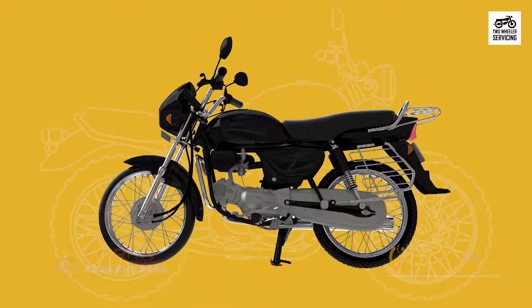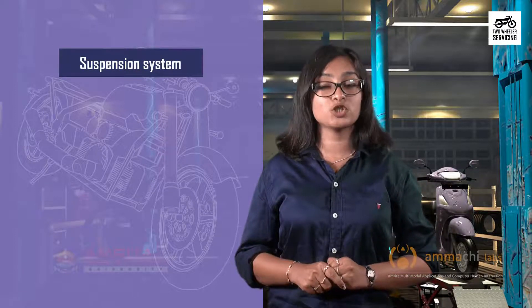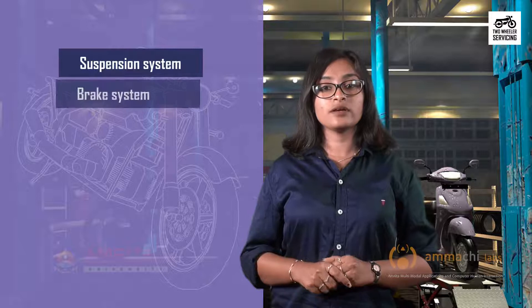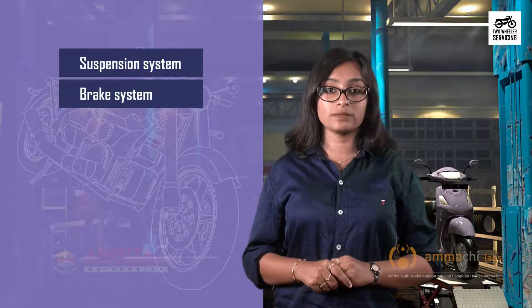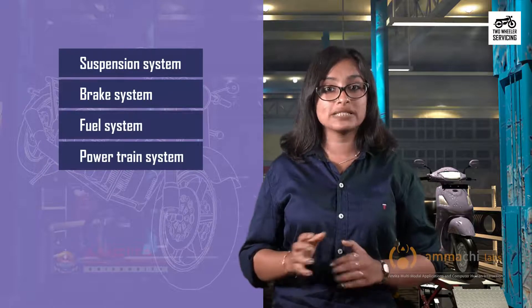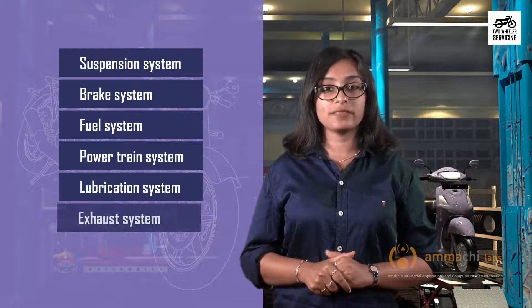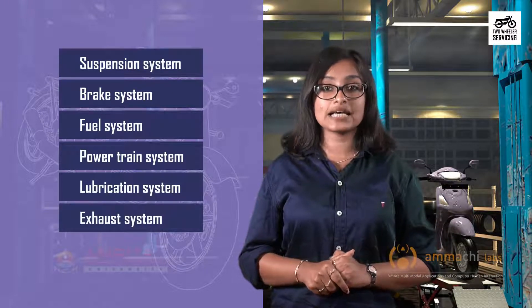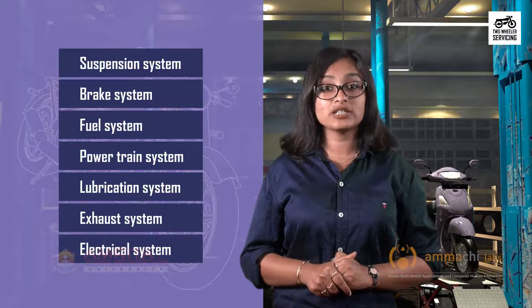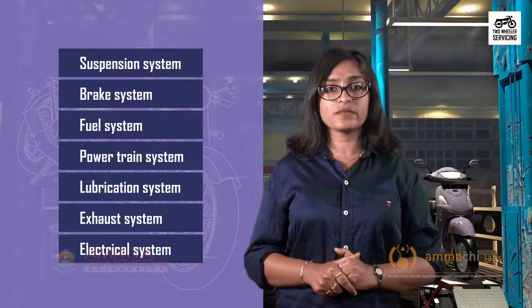They may be classified into various systems. The suspension system makes the ride smooth by absorbing shocks during the ride. The brake system slows or stops the bike. The fuel system makes fuel and air available to the engine. The powertrain system converts the fuel into power that propels the bike. The lubrication system lubricates the engine parts. The exhaust system removes residual gases and smoke, and the electrical system includes the battery and electrical components of the motorcycle.